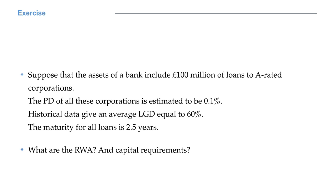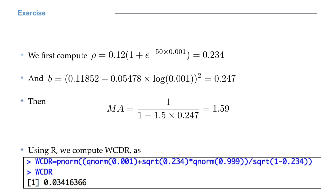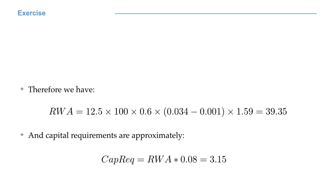We want to compute risk-weighted assets and capital requirements. Using the formulas we have seen so far, we compute ρ, b, the maturity adjustment and the worst-case default rate. For all these computations, we can obviously use R. Risk-weighted assets are then easily obtained by substituting all values in the risk-weighted assets formula. Notice that we can also do the opposite. First, compute capital requirements and then multiply them by 12.5 in order to get risk-weighted assets. It is interesting to notice that under the standardized approach, risk-weighted assets and capital requirements would be higher.